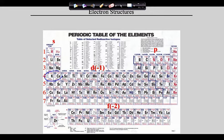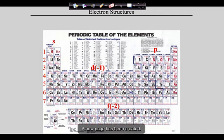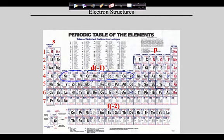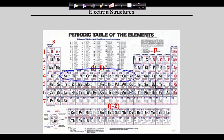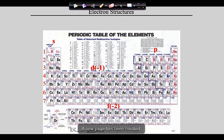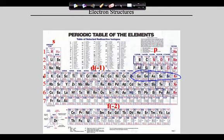When we move down to the 4th energy level, things get more interesting. Elements 19 and 20 are in the 4s sublevel. Elements 21 through 30 are in the D sublevel, but this is not the 4d — it's D minus 1, so 4 minus 1 makes this the 3d sublevel. Then elements 31 through 36 are in the 4p sublevel, and the pattern returns from there.